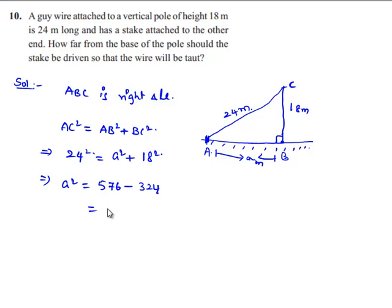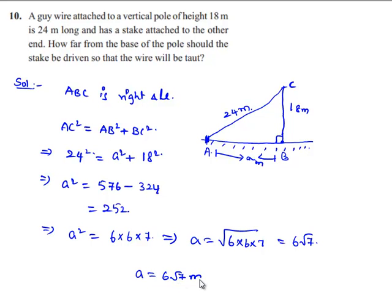Finally we get A square is equal to 252. A square equals 252 can be written as 6 into 6 into 7. That implies A is equal to square root of 6 into 6 into 7, which is equal to 6 root 7.